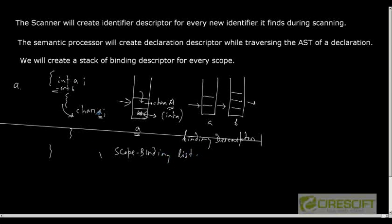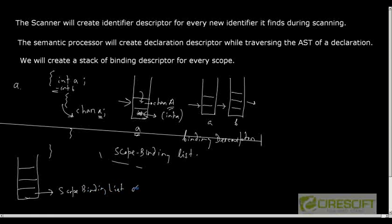To keep track of scope information, we create another stack called the open scope stack, where every stack entry is a scope binding list. If there are three nested scopes, the top of the stack is the innermost scope. So the semantic processor maintains a global open scope stack, where every entry is a list of scope binding descriptors. Every entry in the scope binding list points to the binding stack for a given variable.